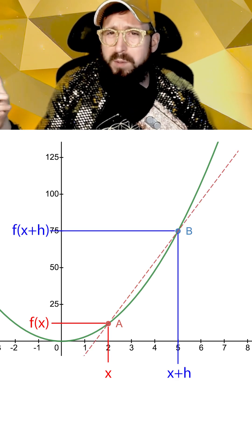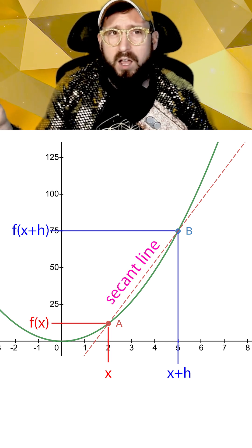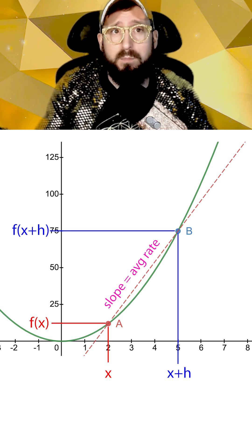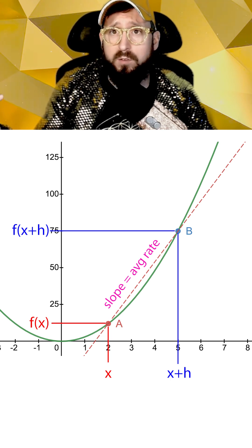Now, if we draw a line in between point a and point b, this would be called the secant line, and the slope of this secant line would be equal to the average rate of change of the function between point a and point b. If we wanted to write this slope as a formula,